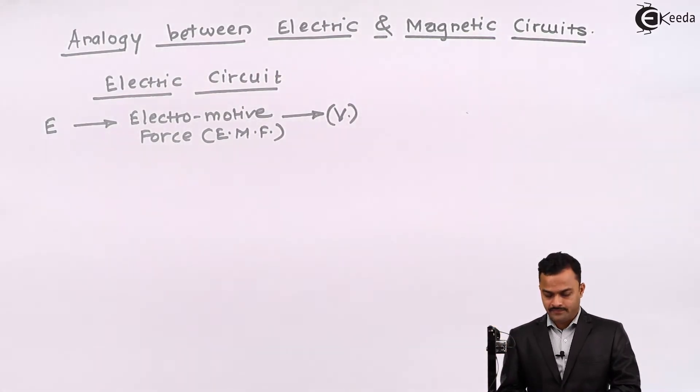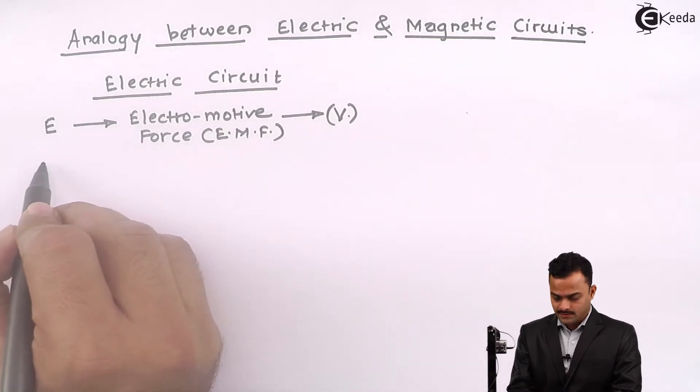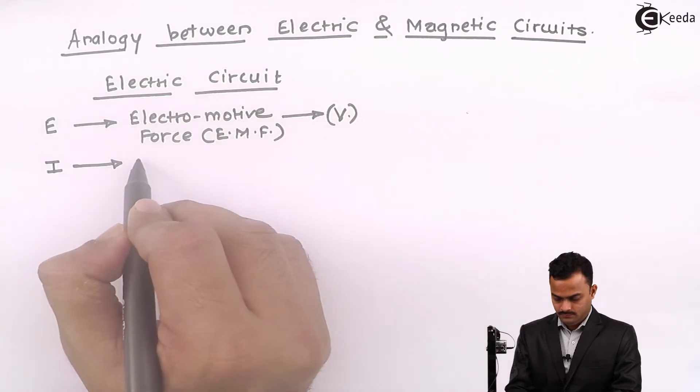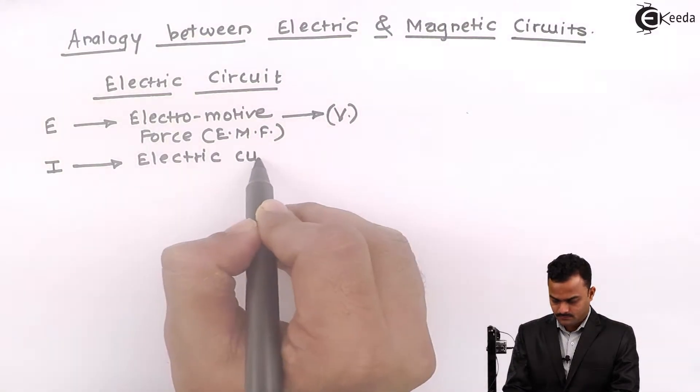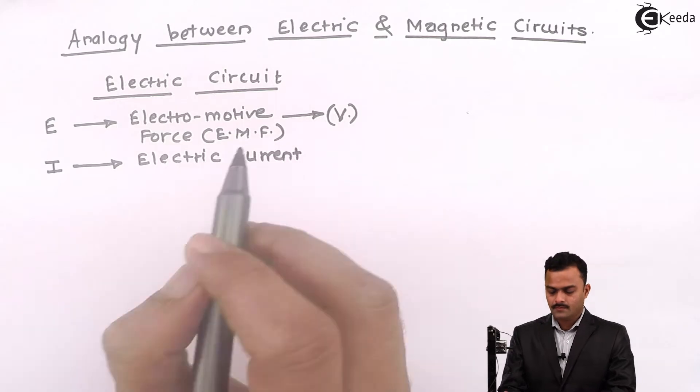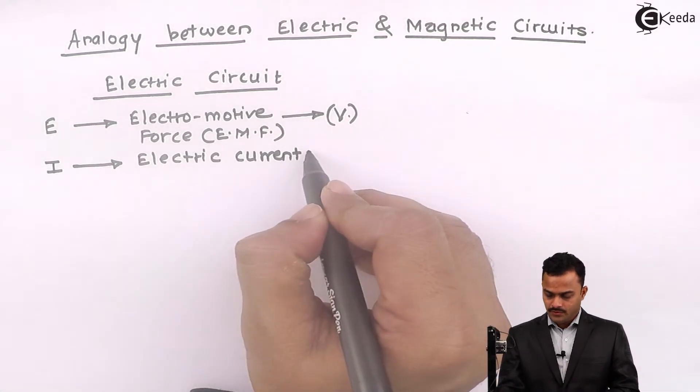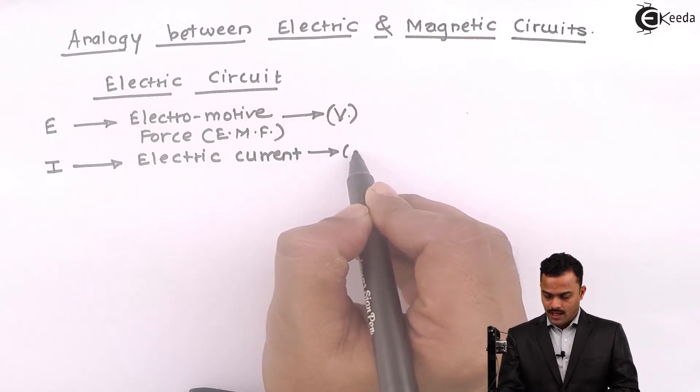Next, we have electric current represented by I. Electric current is nothing but an effect of giving an EMF. So if the EMF is developed and closed circuit is there, electric current will be flowing through a circuit. Unit is Ampere.